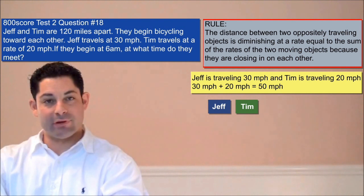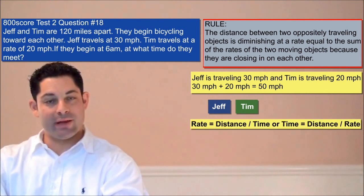Now we want to substitute our given distance, 120 miles, and our rate, 50 miles per hour, into the rate formula to find the time it takes for Jeff and Tim to meet.